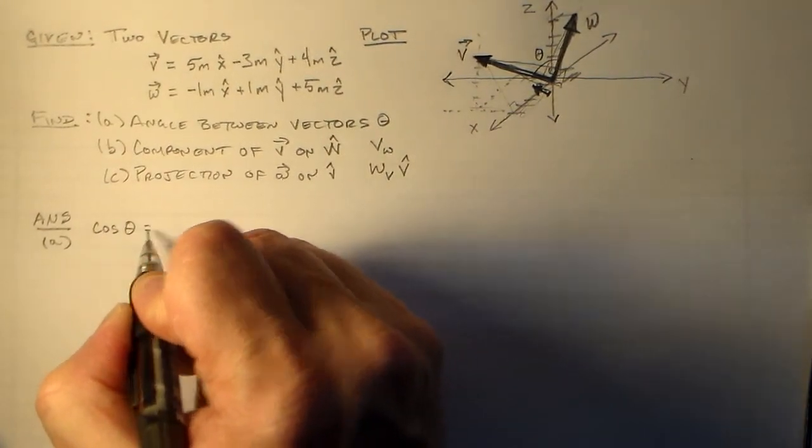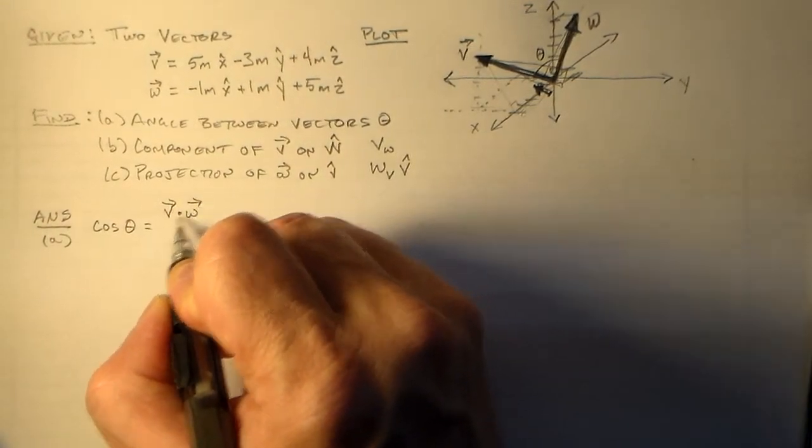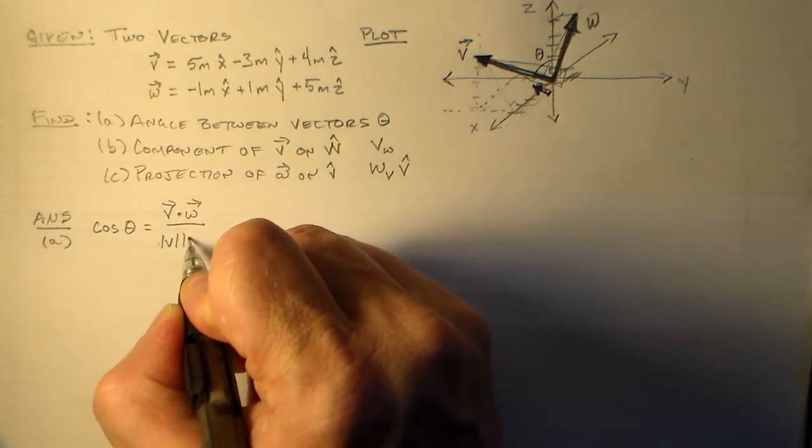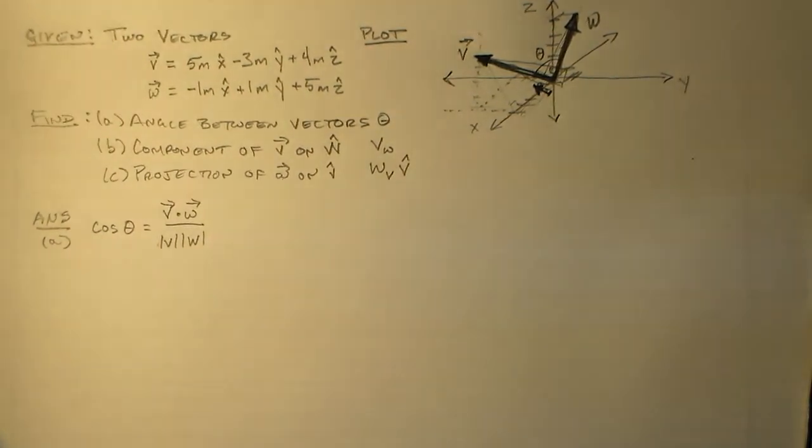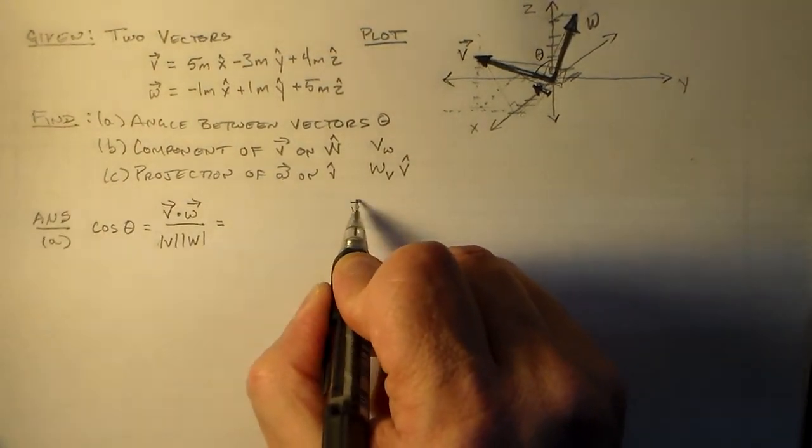So cosine theta. The way we find cosine theta is take the dot product of v and w, divide it by v, divide it by w, the magnitudes of each. And that's really all we need to do.